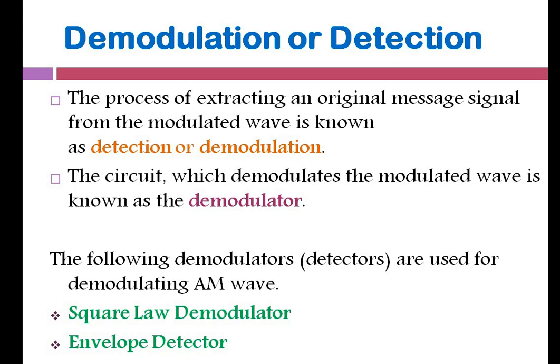In the square law modulator, you require a summer which is used to combine your message signal as well as the carrier signal, which is given to your square law device — that is nothing but a non-linear element, a diode or a transistor. Then it is given to a band pass filter to remove the unwanted signals. We only need a conventional amplitude modulating signal, so the band pass filter extracts only the amplitude modulated signal.